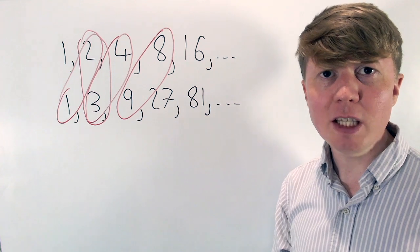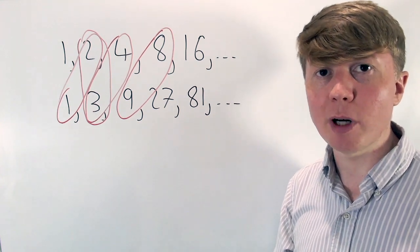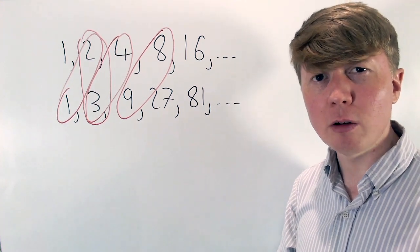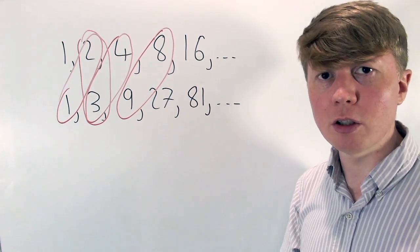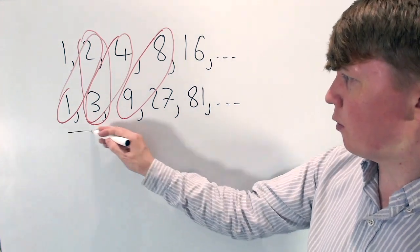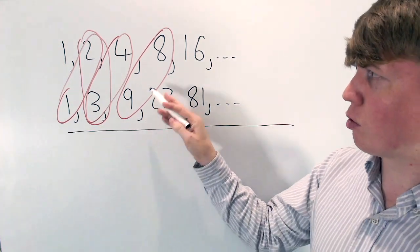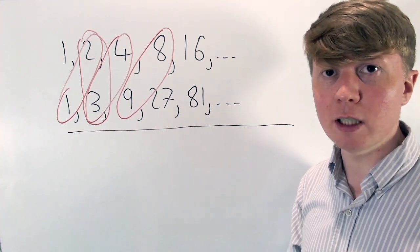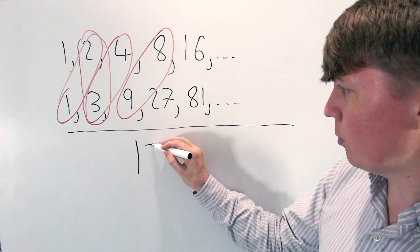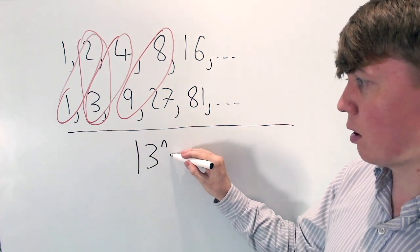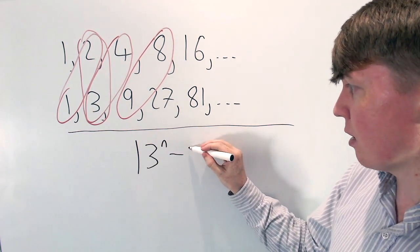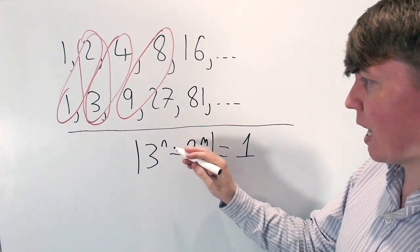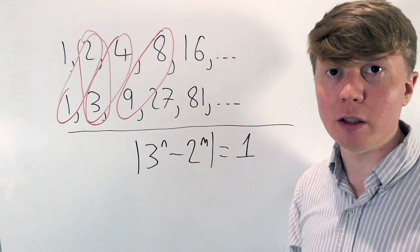The only way of making them equal to each other would be taking them both to the power of 0, so that they're equal to 1, because otherwise powers of 2 are even whereas powers of 3 are all odd. So I'm interested in finding more examples of powers of 2 and 3 that are only 1 apart. If you look at some larger powers they seem to be much more spread out. We can form this as an equation: the modulus of 3 to the n minus 2 to the m is equal to 1, where n and m are non-negative integers.